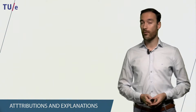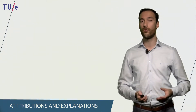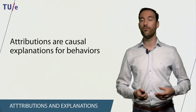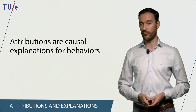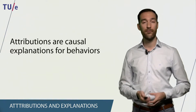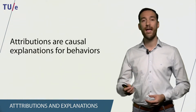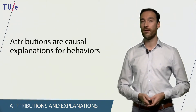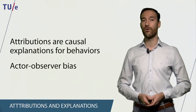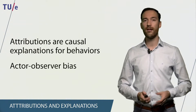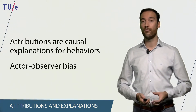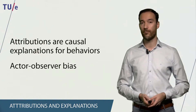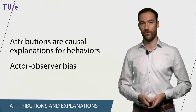When we talk about explaining our own behavior and that of other people, we come to the concept of attributions. Attributions are causal explanations for behaviors. We use attributions to explain why we behave in certain ways, and for this we can use internal attributions based on personality traits, or external attributions based on situational factors. By doing so, we tend to make certain errors and biases. One of these is called the actor-observer bias, which means that as an actor we tend to attribute our own behavior more to situational causes, whereas as an observer we tend to attribute another person's behavior more to internal causes.